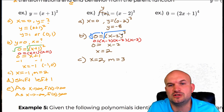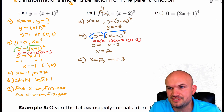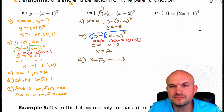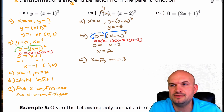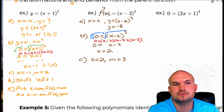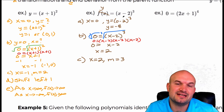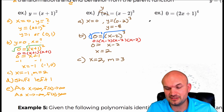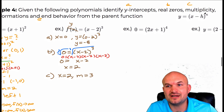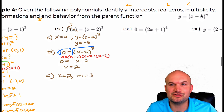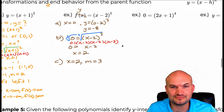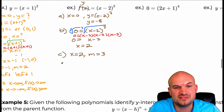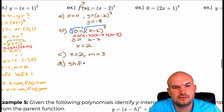For identifying the transformations here, we're subtracting a two inside the function. This is a cubic, but look at the parent function — h is going to be your transformation. If we're doing x minus h, h is our transformation. So in this case, the transformation is shift right two.